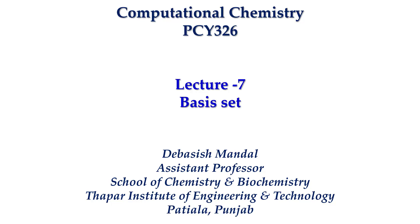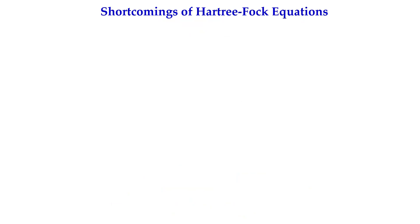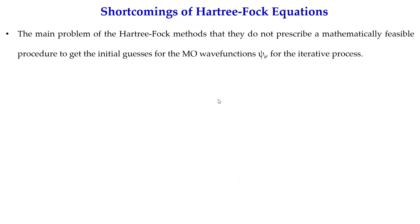Now we have the form of the wave function, but the main problem is: from where do we get the initial guess? This is a shortcoming of Hartree-Fock theory — it does not prescribe a mathematically feasible procedure to get the initial guess for the MO wave function ψ_i for the iterative process. We know how to refine through iteration, but we do not know how to get the initial guess.